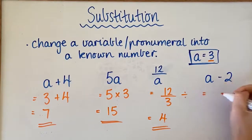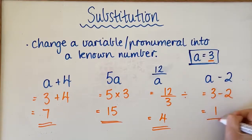In this one, we have a subtraction. So we would again change our a to a 3, take away 2, and we would be left with 1.